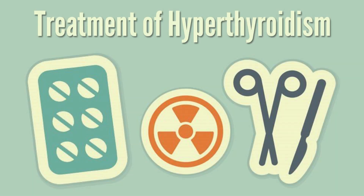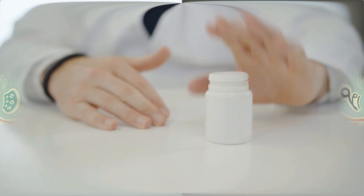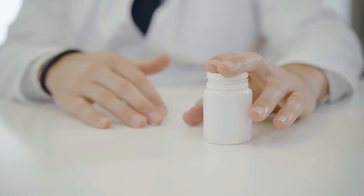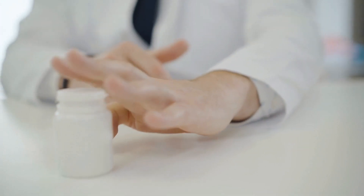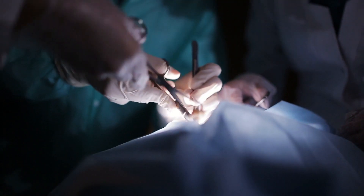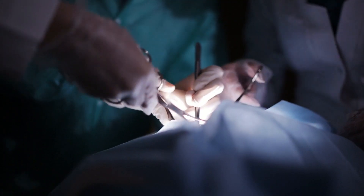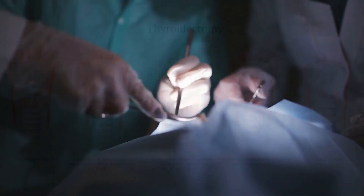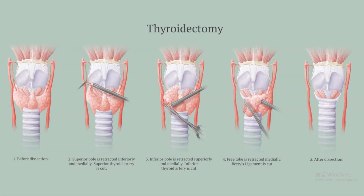Several treatments are available for hyperthyroidism. Doctors use antithyroid medications and radioactive iodine to slow the production of thyroid hormones. Sometimes, hyperthyroidism treatment involves surgery to remove all or part of your thyroid gland.